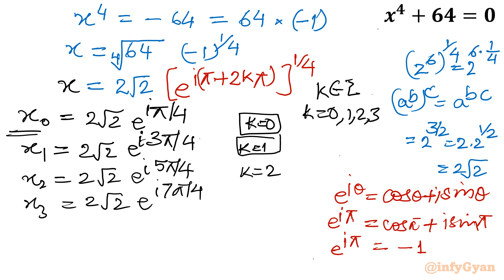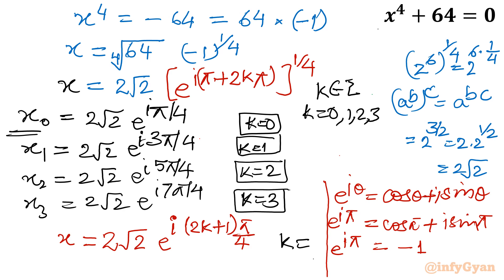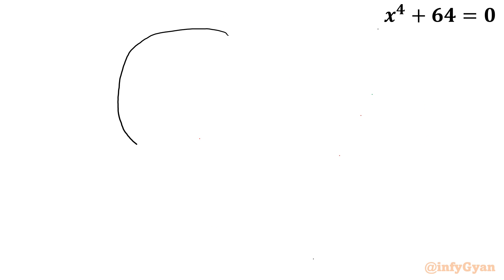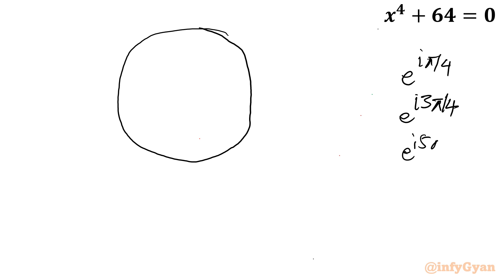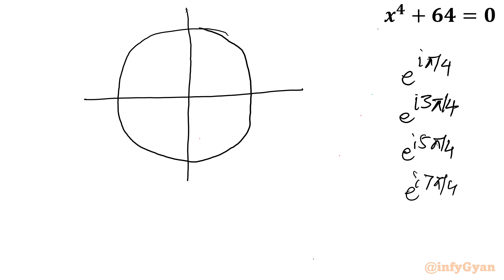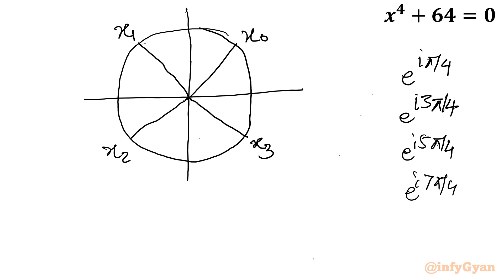Now I will show you the unit circle. The argument values we found are π/4, 3π/4, 5π/4, and 7π/4. If I plot them on the real and imaginary axis: x₀ is at π/4, x₁ is at 3π/4 — it's a symmetrical shape. Just bifurcate the unit circle into 4 equal parts: x₂ is at 5π/4 and x₃ is at 7π/4.